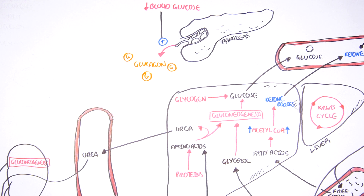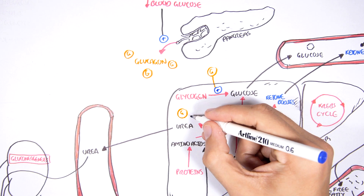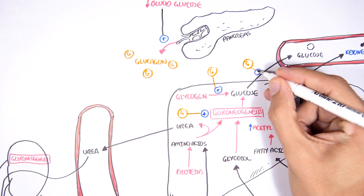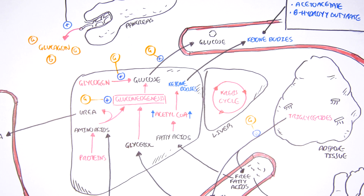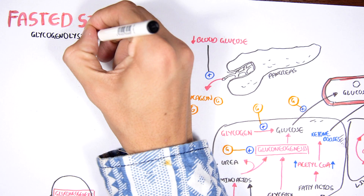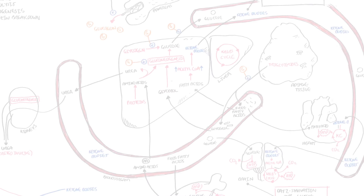To summarize the role of glucagon: secreted by the pancreas, it stimulates glycogen breakdown, promotes gluconeogenesis, promotes the release of glucose into the blood from the liver, and promotes lipolysis — the breakdown of triglycerides into free fatty acids and glycerol — essentially the opposite effects of insulin. Recapping the fasted state: the key processes are glycogenolysis, gluconeogenesis, lipolysis, ketogenesis, and finally protein breakdown.